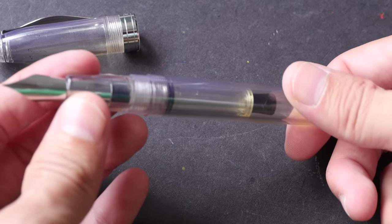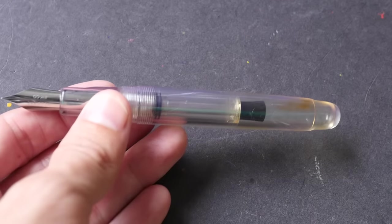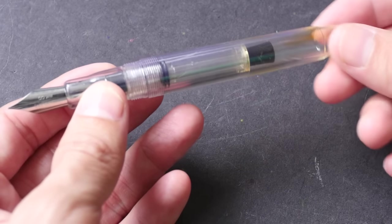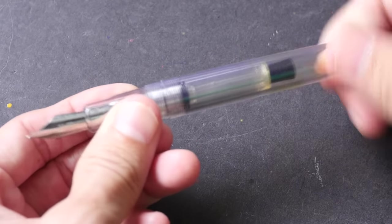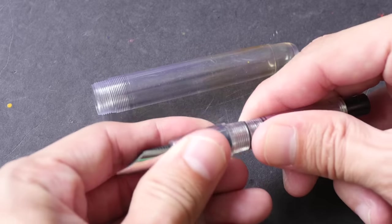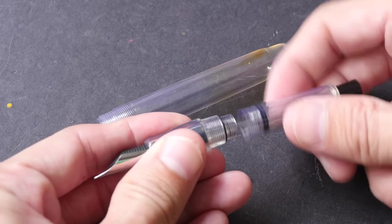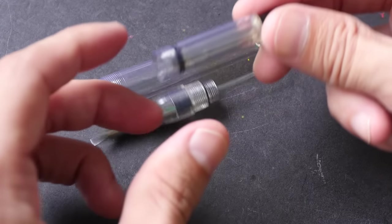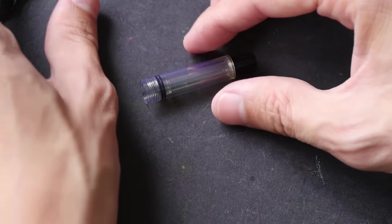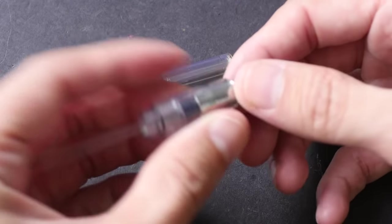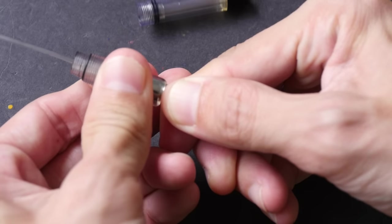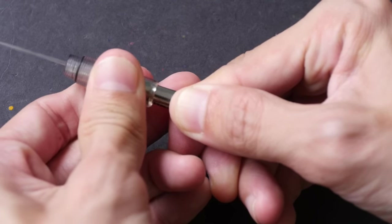This is the pen - the nib, the grip, and the body - and it's very easy to dismantle this pen. So this is the body and this is the piston filler. You can see this is the piston filler, and you can also dismantle the feed and nib - just basically twist very slowly and pull it out.